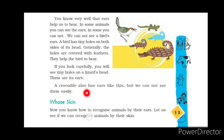A crocodile also has ears like this, but we cannot see them easily. Like the lizard, the crocodile is also a reptile. They look almost similar but the size is different — lizards are very small and crocodiles are big. Crocodiles also have ears, but we cannot see them easily because they are very small and located on both sides of their head.